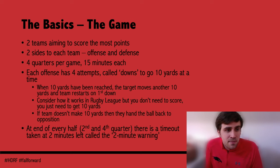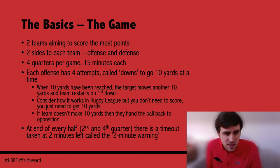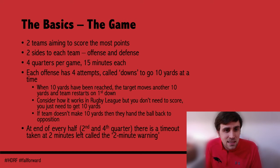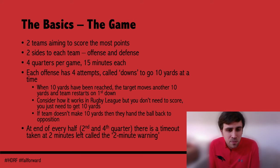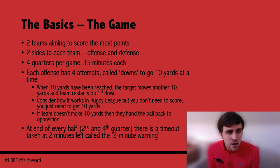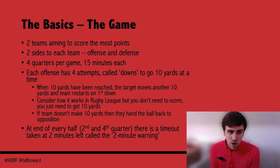Each offence has four attempts to go 10 yards, and each attempt is what we refer to as a down — so you'll hear terms like first down, second down, and so on. The aim is for the offence to go at least 10 yards within those four downs. When the 10 yards is reached, the target moves another 10 yards, unless they score in the end zone. It's similar to rugby league where if you don't score a try you have to give the ball back, except here you only need to go 10 yards.